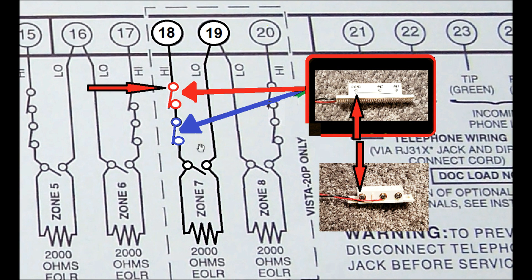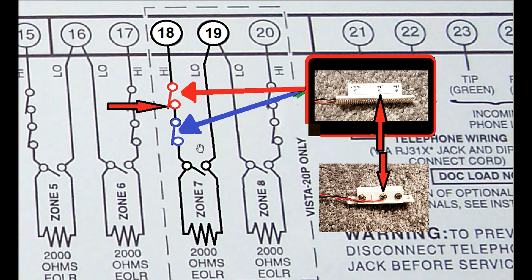The contact labeled COM, which stands for common, is the top circle on your first sensor. The second circle on your schematic corresponds to the sensor electrical contact labeled NC, or normally closed.